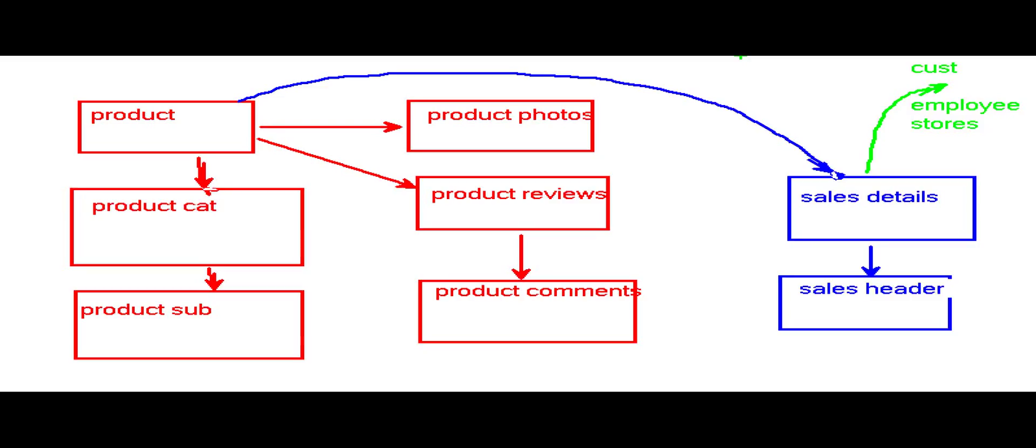I'd have to join maybe sales details and headers. I'd have to go grab the dates out of that and do where clauses on my dates. It could be complicated. I may have to pull in the product, the product category, product subcategory tables. Several tables join together.